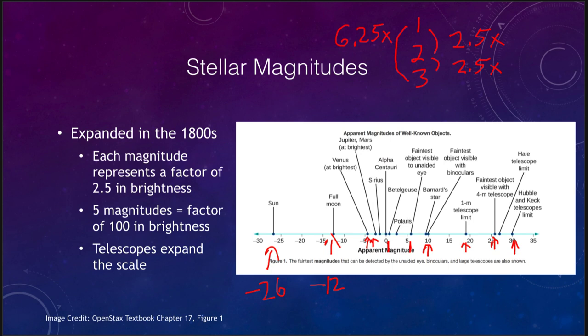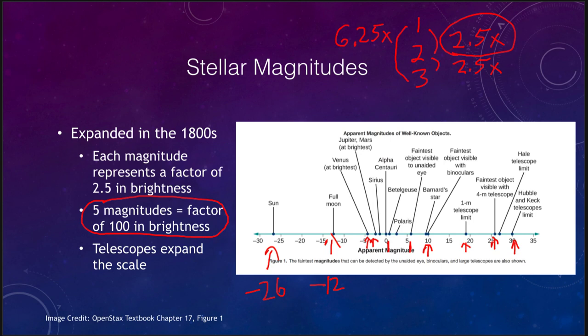The most important things to know are that the difference between adjacent magnitudes is a factor of 2.5 in brightness, and that five magnitudes — multiplying 2.5 five times — equals a factor of 100 in brightness. This is what Hipparchus found between his brightest first-magnitude stars and his faintest sixth-magnitude stars: about a factor of 100 in brightness. We still use this scale today; even Hubble Space Telescope measurements are converted to the scale originally developed by Hipparchus.